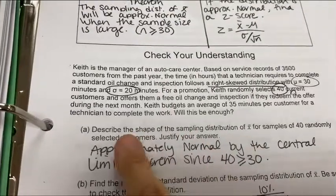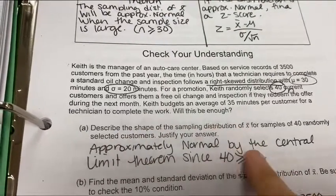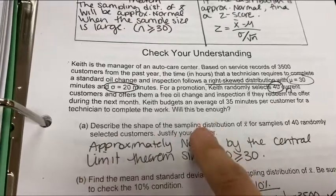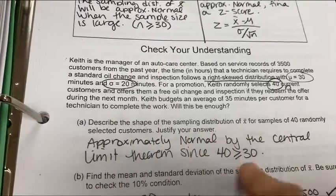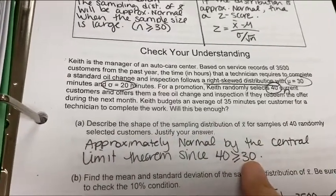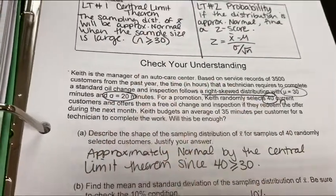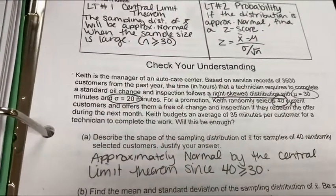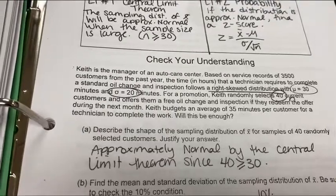So first, it says describe the shape. Approximately normal. Our sampling distribution is going to be normal because 40 is greater than 30. That's the application of this and the concept of our tiny URL we saw in class today.